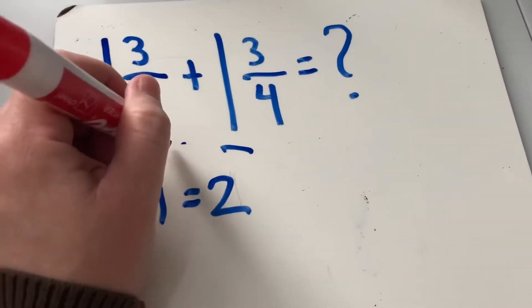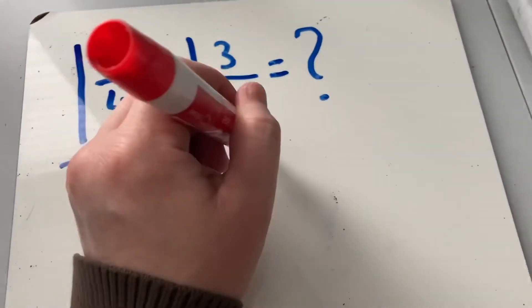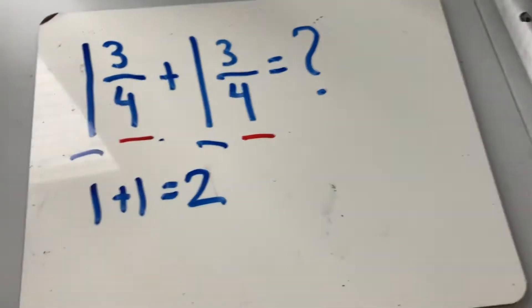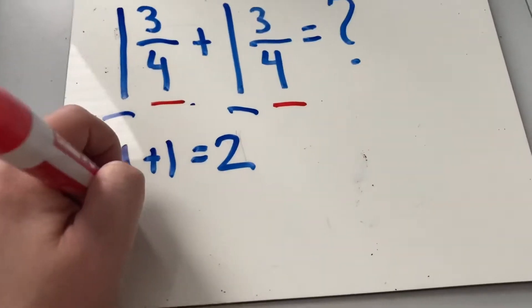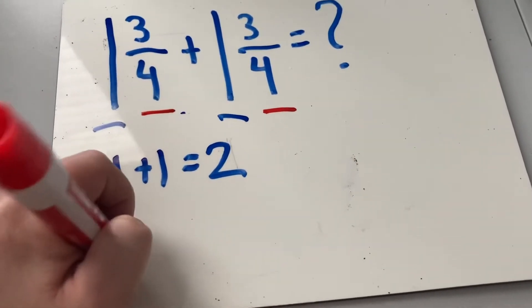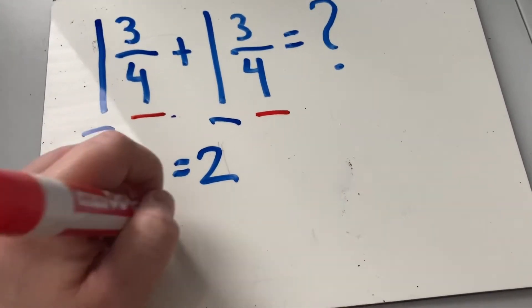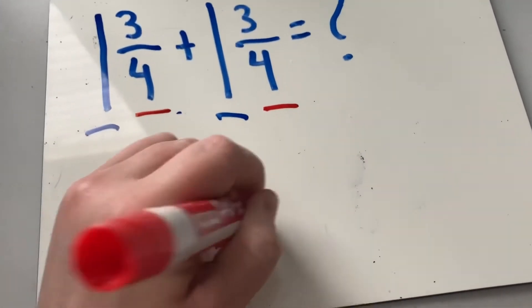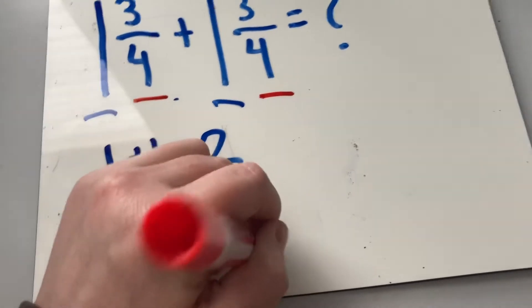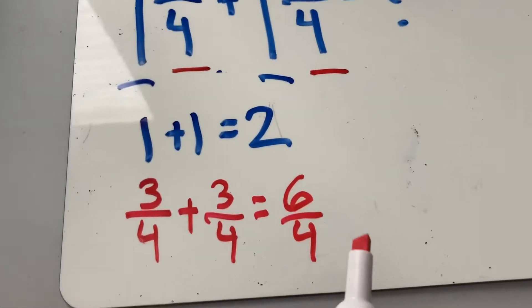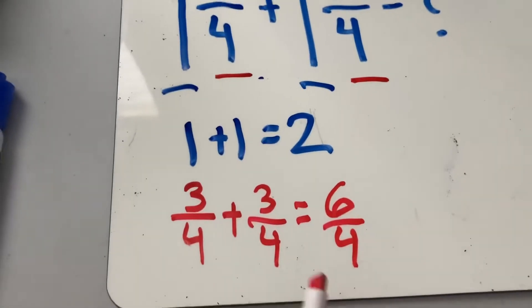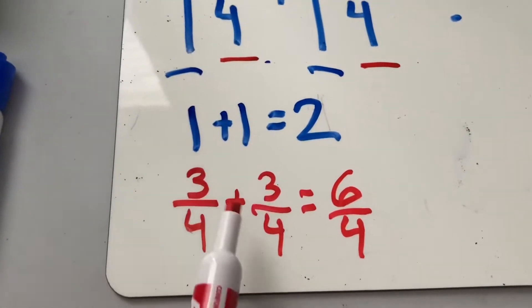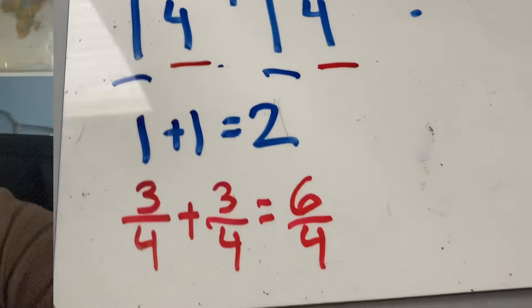The next step is to add my fractions. I see the fractions three-fourths plus three-fourths. Three-fourths plus three-fourths equals six-fourths. Remember, the denominator stays the same — it's from the same whole. Only your numerator will change.